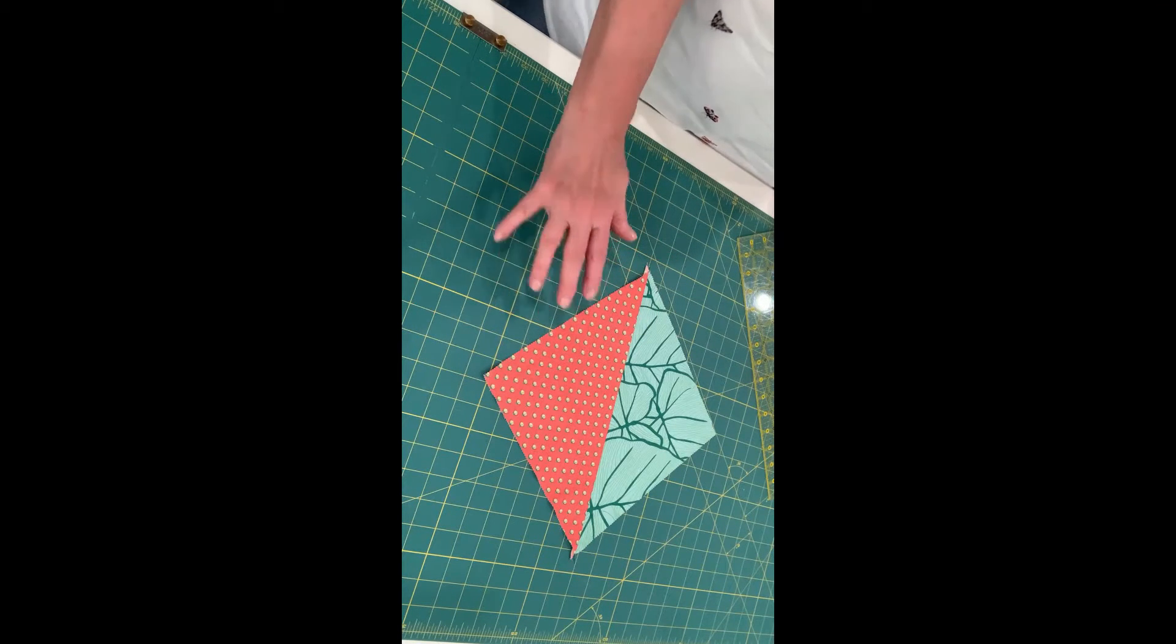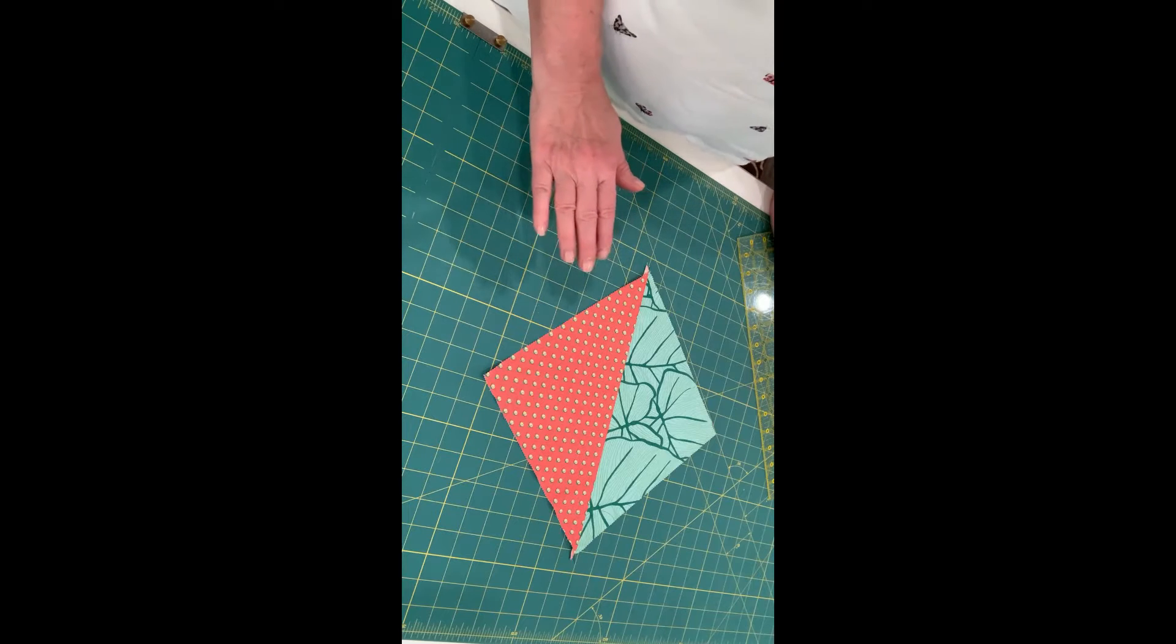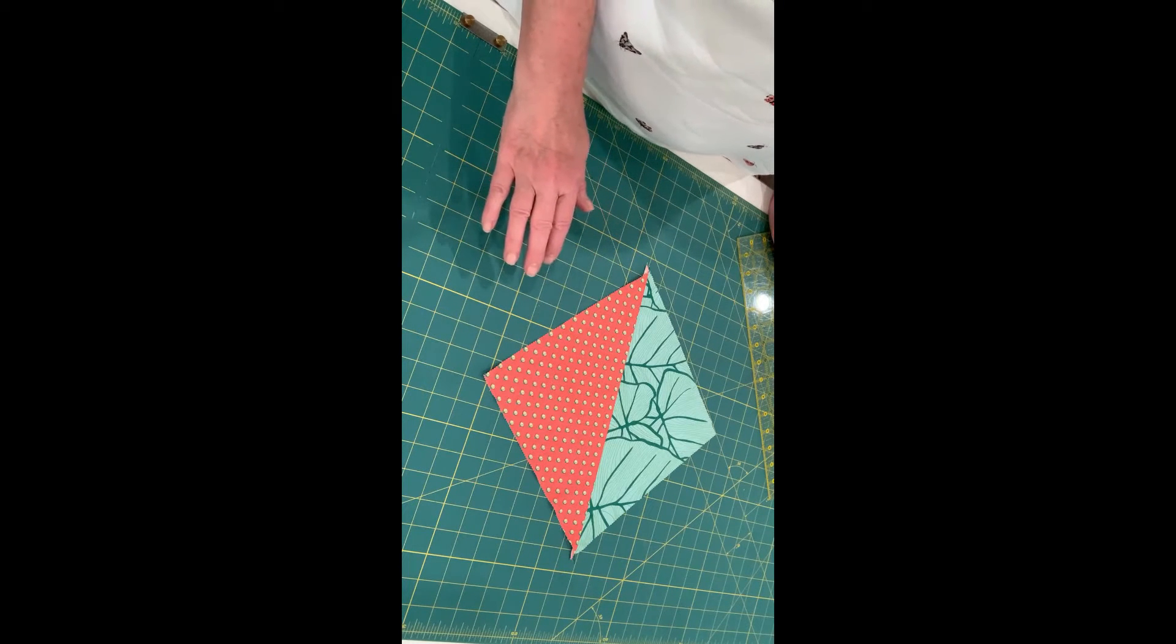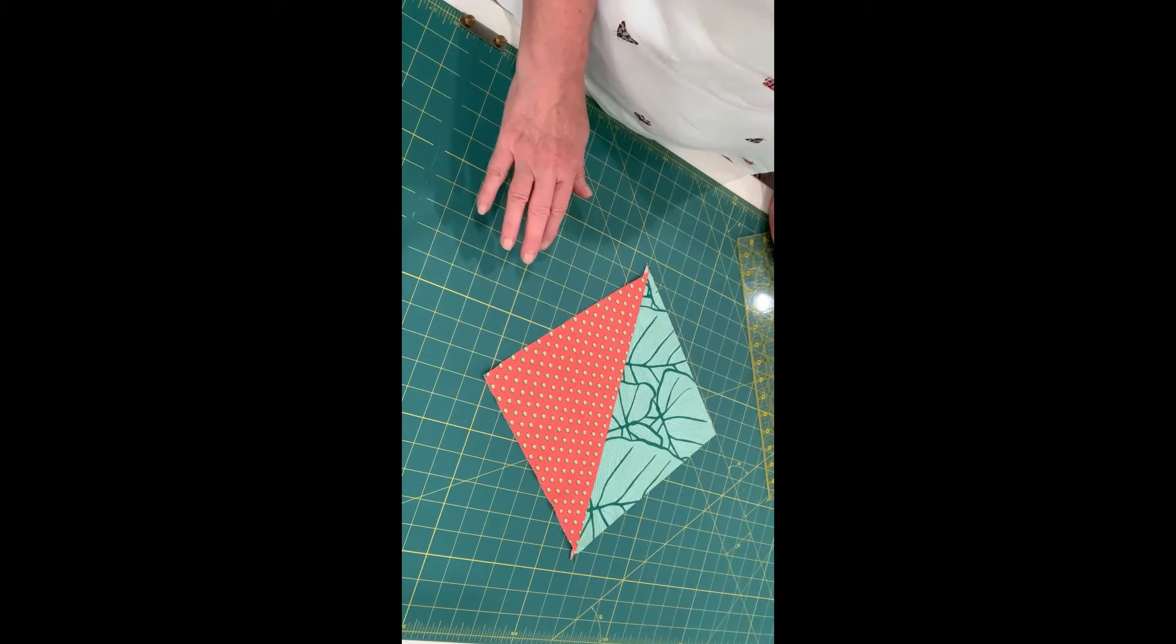And in order to get a 9 1⁄2 inch ruler, you need to get a square ruler. And it can be bigger than 9 1⁄2 inches, but it has to be at least 9 1⁄2 inches.